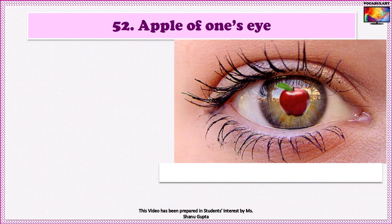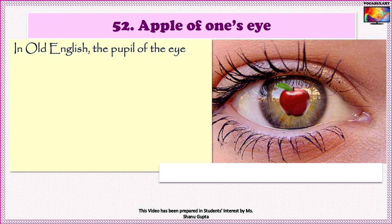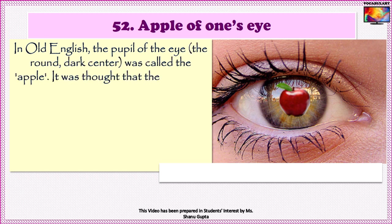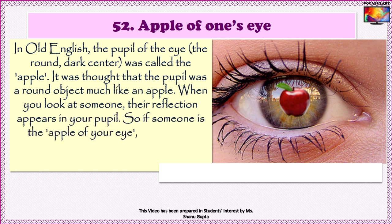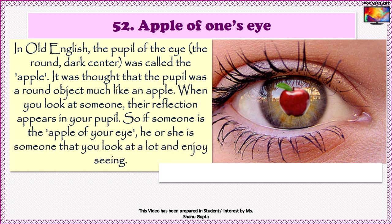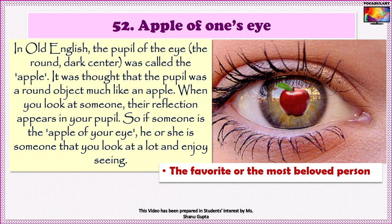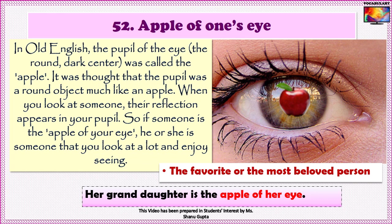Idiom No. 52 is 'Apple of one's eye.' In Old English, the pupil of the eye — the round dark centre — was called the apple. It was thought that the pupil was a round object, much like an apple. When you look at someone, their reflection appears in your pupil. So, if someone is the apple of your eye, he or she is someone that you look at a lot and enjoy seeing. The idiom means the favourite or the most beloved person. An example sentence is: 'Her granddaughter is the apple of her eye.'